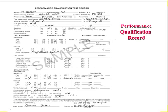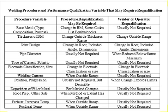The last page covers the basic qualification requirements — the WPS holding procedure and performance qualification variables that may require re-qualification. If you have an existing WPS but need to change something, you need to re-qualify. The essential variables are: base metal, thickness of base metal, joint design, pipe diameter, type of current, electrode classification and size, welding current, position, deposition of filler metal, root preparation, other side preparation, preheat and interpass temperature, and postweld heat treatment temperature. If you change any of these, you must re-qualify the WPS and prepare a new one.